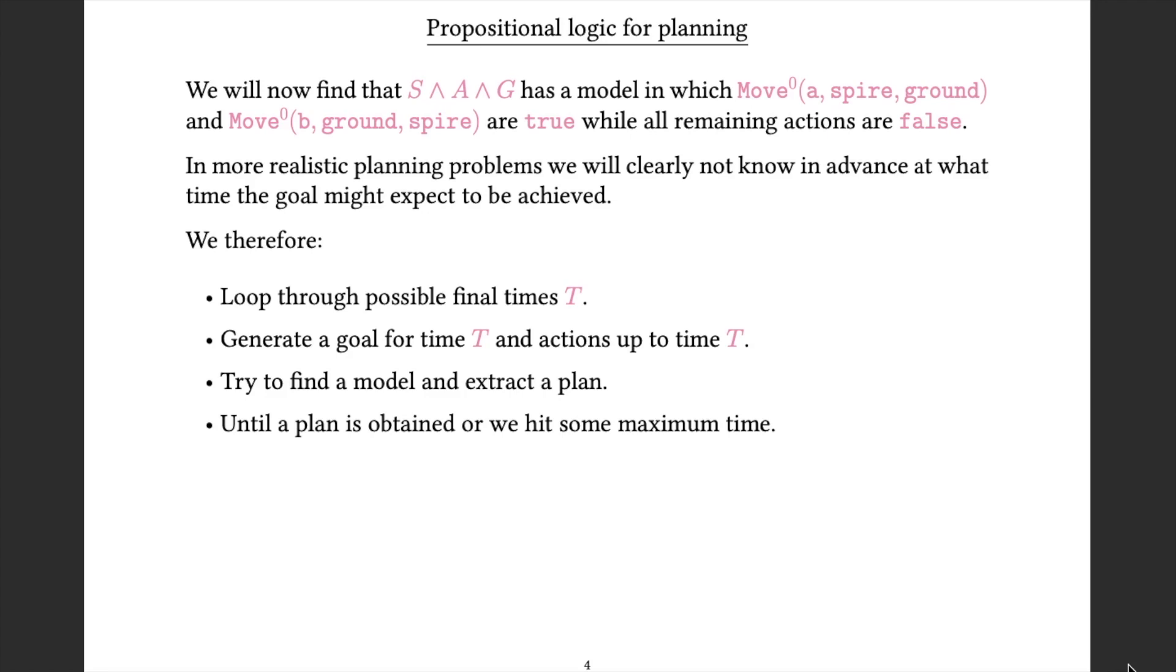This is the key to how we're going to make this work. We want to set things up in such a way that if we get a satisfying assignment to our overall formula, then actions that are assigned true tell us the actions that we need to do. And because there are copies of those actions for all the possible steps, not just move 0, but in a more realistic problem we may have move 1, move 2, move 3, and so on, we want to have an assignment that gives true to the specific actions at the specific steps that are needed to solve the problem.